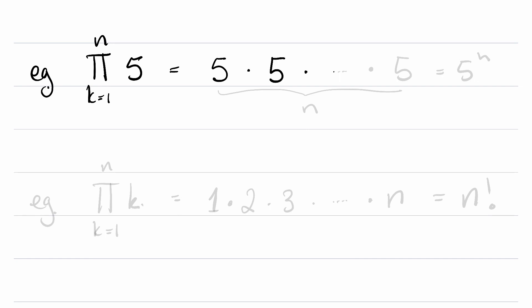times a sub 3, all the way up to a sub n, which is 5. How many of these are there? There are n of them, so this is going to be 5 to the n.